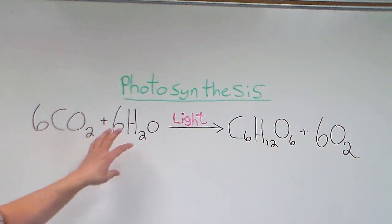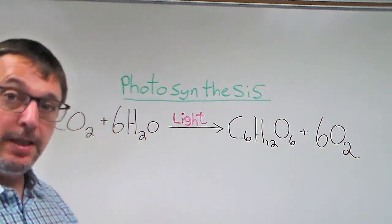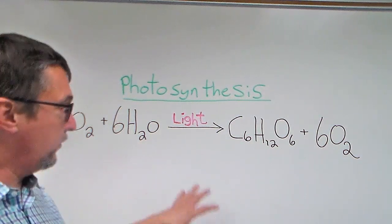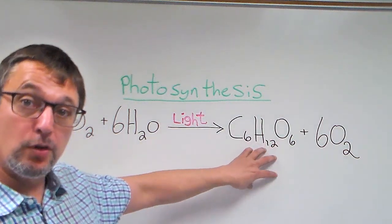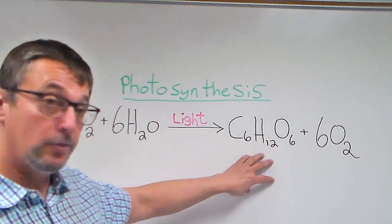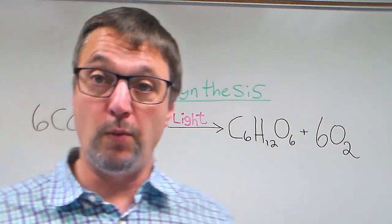So plants need carbon dioxide and water, and then they're going to join them together. That takes energy to build things. That energy comes from light. They convert light energy into chemical energy of sugars. So they get sugars and then plants give off oxygen as a waste product.